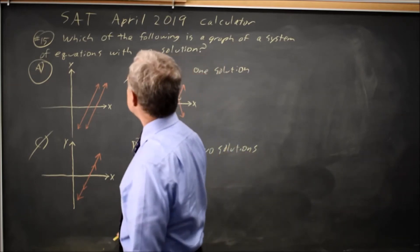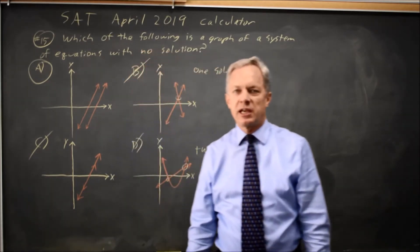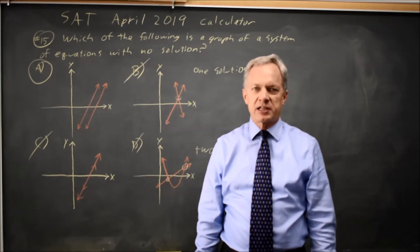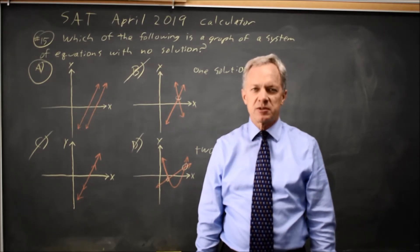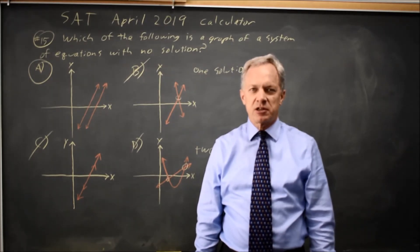The College Board is asking for no solution, so that would be choice A. The College Board often asks about the number of solutions of a system, and this time they decide to do it in graphical form.